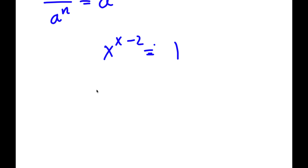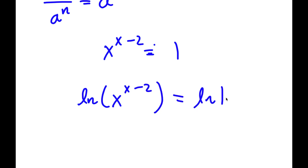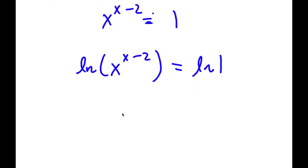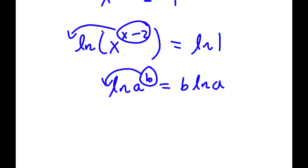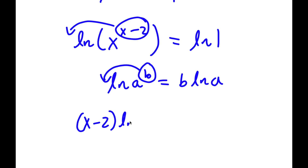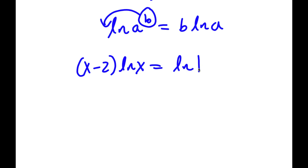Now I'm going to take the natural log on both sides. So now I have ln of x to the power of x minus 2 is equal to ln 1. And if I have something in the form ln a to the power of b, I can move this exponent b to the front, so this equals b times ln a. So I can move x minus 2 to the front: x minus 2 times ln x is equal to ln 1, which is simply 0. So now I have x minus 2 times ln x is equal to 0.